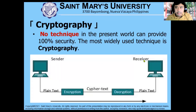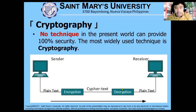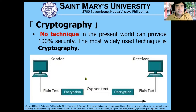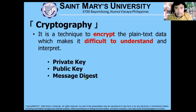To address these security attacks on our network, we introduce the concept of cryptography. No technique in the present world can provide 100% security; however, the most widely used technique is cryptography. The original message or plaintext is encrypted, transmitted over the internet, then decrypted and interpreted back to plaintext so the receiver can understand what the sender has sent. There are three types of cryptography: private key, public key, and message digest.